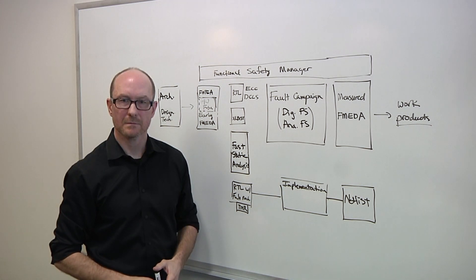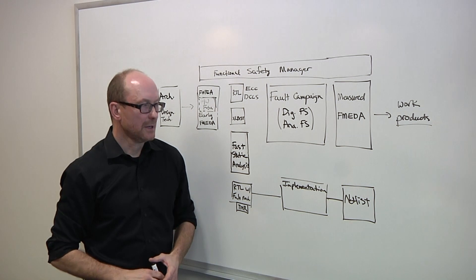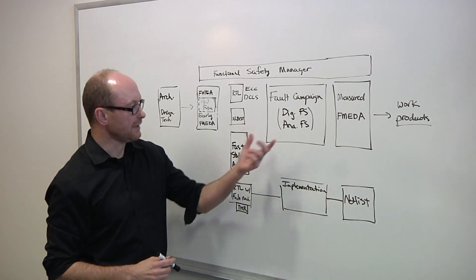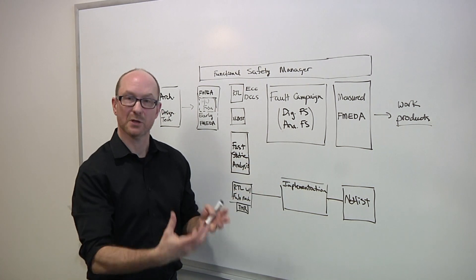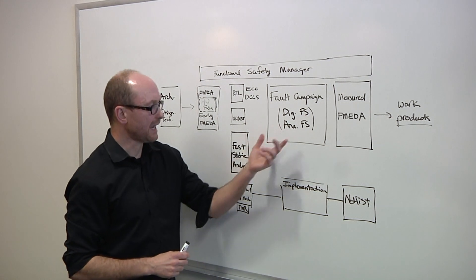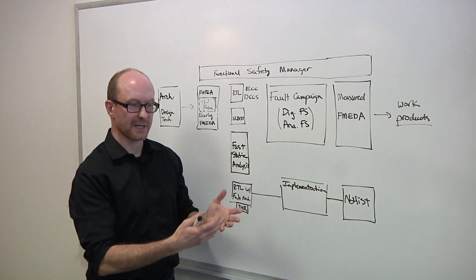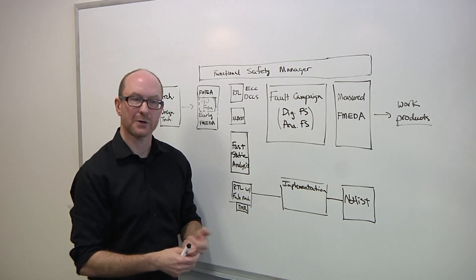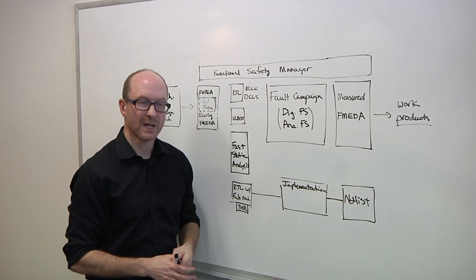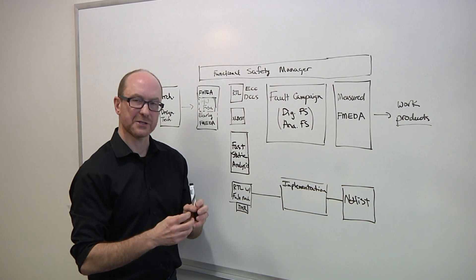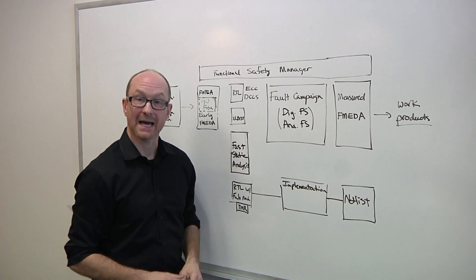Where does circuit aging and device aging fit into this flow? Typically it fits into the analog fault simulation component. As analog circuitry is analyzed using SPICE simulators down to the transistor level, that's where you're typically injecting device aging analysis at that level.